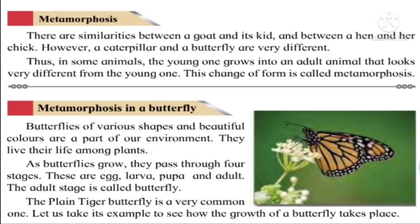Butterflies come in various sizes, shapes, and colors. They are part of our environment and live among plants. As butterflies grow, they pass through four stages: the life cycle of a butterfly has four stages — egg, larva, pupa, and adult. The larva stage is also called the caterpillar stage, and the pupa stage is also called chrysalis. So we have four stages: egg, larva, pupa, and adult; larva is also called caterpillar, and pupa is also called chrysalis.